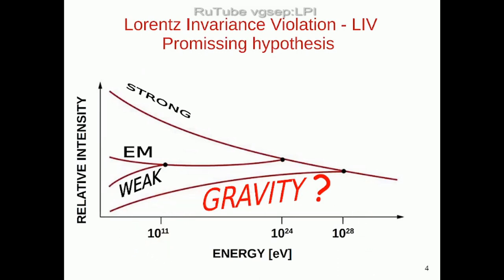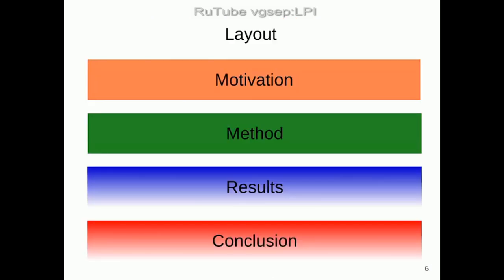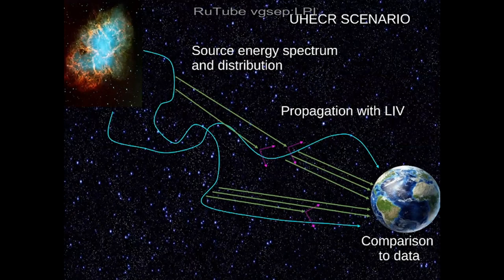However, when we try to unify the forces — as understood in this cartoon showing relative intensity as a function of energy — we can unify some of them, but it becomes very hard to make a quantum field theory of gravity. One of the most promising hypotheses is that if we allow a small break in Lorentz invariance, it becomes easier to unify gravity. The effects are only expected at the highest energies, which we cannot test with laboratory tests but can test with ultra-high-energy cosmic rays.